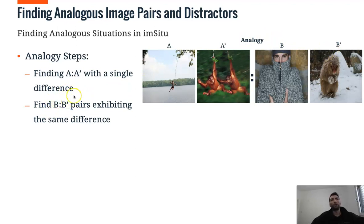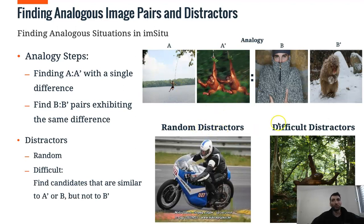And after we use the semantic annotations to find these pairs, we then search for distractors. And we experiment with random distractors and also with difficult distractors.